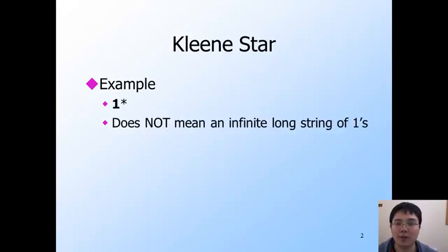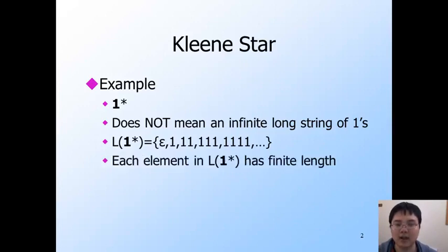Let's begin with Kleene star. Kleene star is an operation on regular expressions. For example, we can have 1*, where 1 is a regular expression of length one. However, there is a common misconception that 1* is an infinite long string of ones. This is not the case. In fact, 1* is still a regular expression whose language L(1*) is the set of strings of zero or more ones. Although this set is infinite, each element in it has finite length. This is similar to the set of integers, where the set is infinite, but each element it contains is finite.